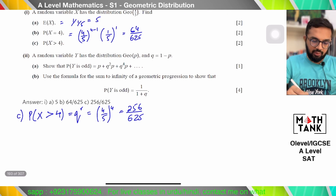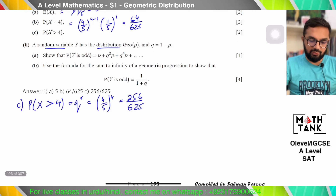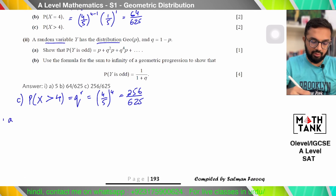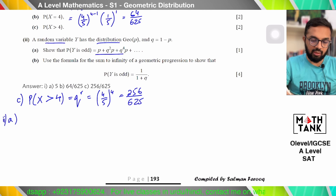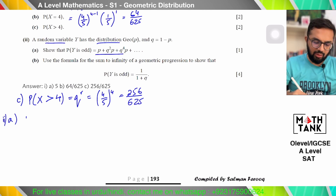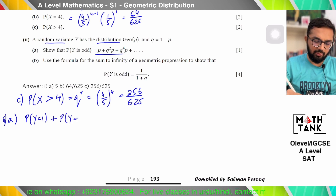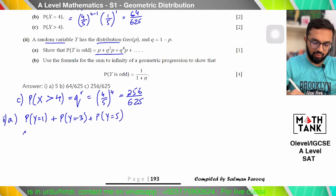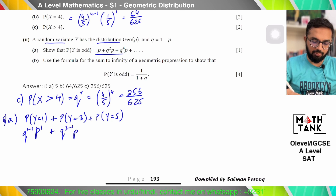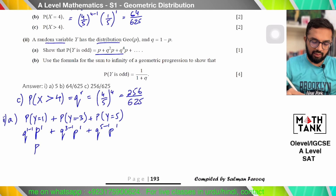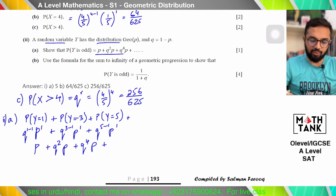A random variable Y has a geometric distribution. Show that P(Y is odd) equals a certain value. Y is odd when Y = 1, 3, 5, and so on. Using the formula q^(r−1) × p for each, I get: P(Y=1) = p, P(Y=3) = q²p, P(Y=5) = q⁴p. So the terms are p + q²p + q⁴p and this pattern continues.